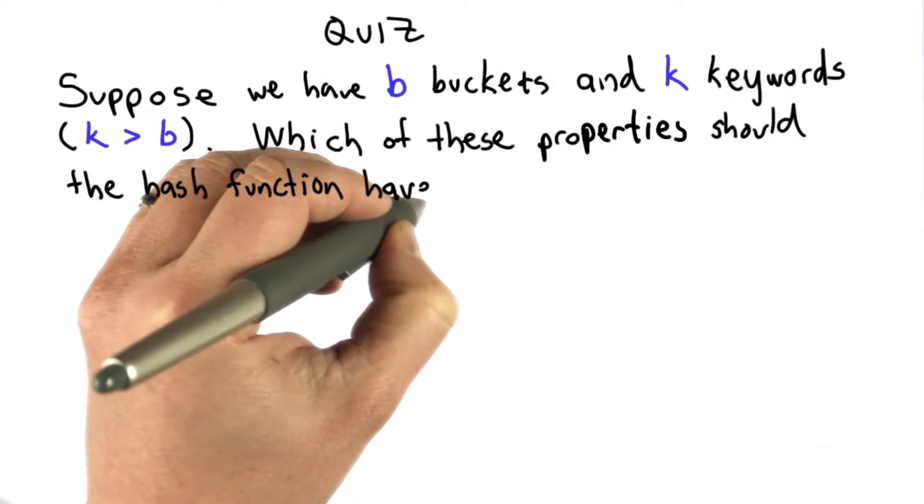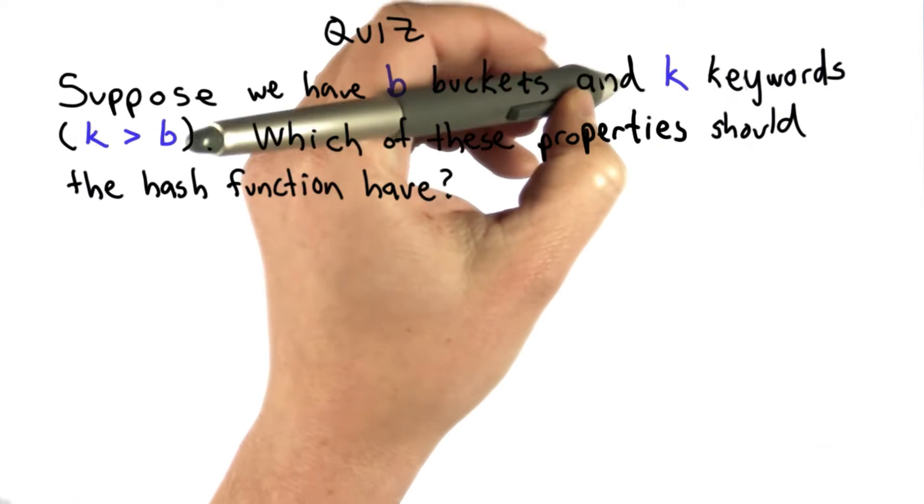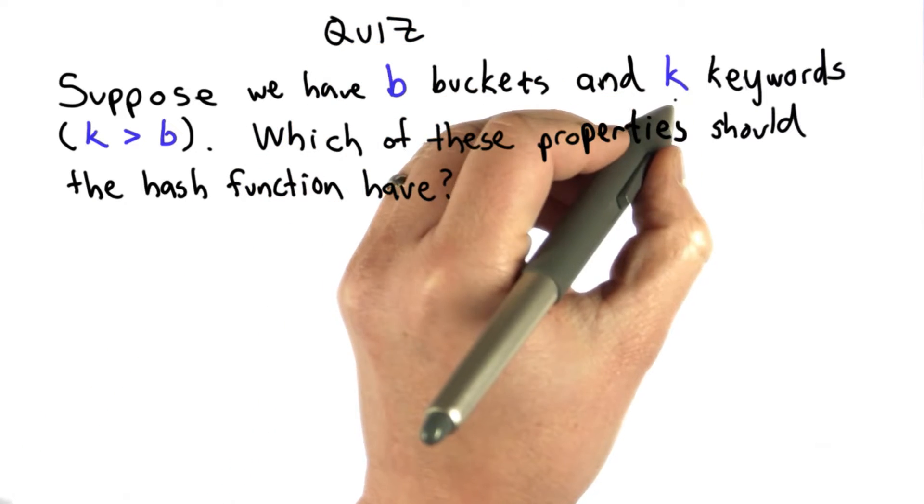So now we're ready for a quiz to see if you understand the goal of a hash table. So the question is if we have b buckets in our hash table, and we have k keywords,